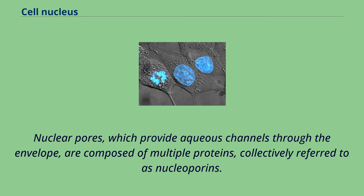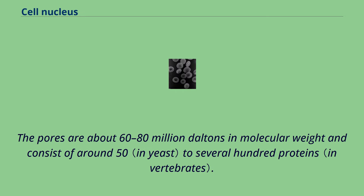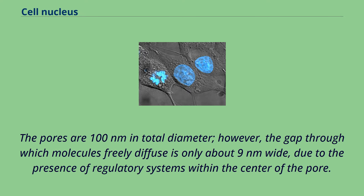Nuclear pores, which provide aqueous channels through the envelope, are composed of multiple proteins collectively referred to as nucleoporins. The pores are about 60 to 80 million daltons in molecular weight and consist of around 50 to several hundred proteins. The pores are 100 nanometers in total diameter; however, the gap through which molecules freely diffuse is only about 9 nanometers wide, due to the presence of regulatory systems within the center of the pore.